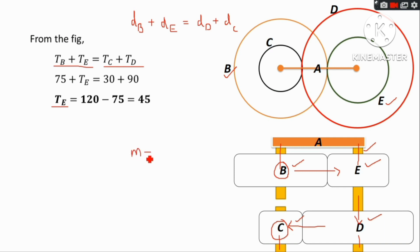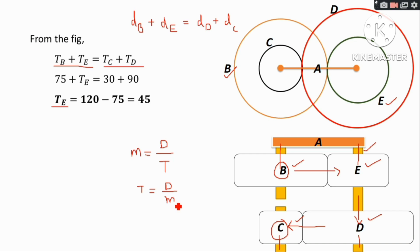Module is equal to diameter divided by number of teeth, so number of teeth is equal to diameter divided by module. The module is constant for all meshing gears, so diameter is proportional to the number of teeth.